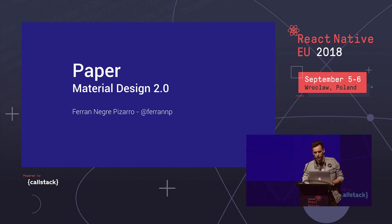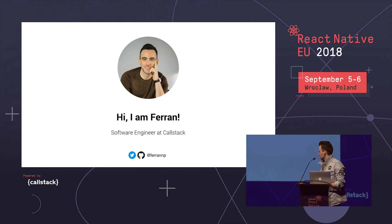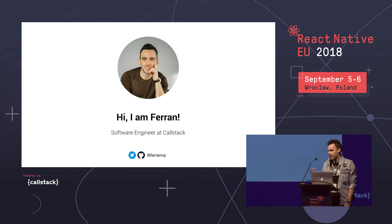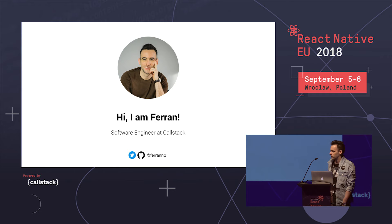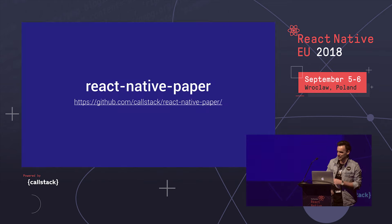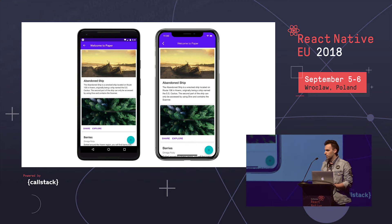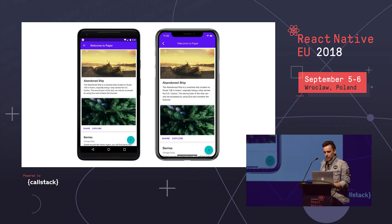Let's talk about Paper. My name is Ferran. I work at Callstack, where we are mostly writing cross-platform applications. Now let's go to the topic — we're going to talk about React Native Paper, or Paper for friends. Paper is a library we've been working on over the past months, and it allows you to write fully cross-platform Material Design UIs for your React Native app.